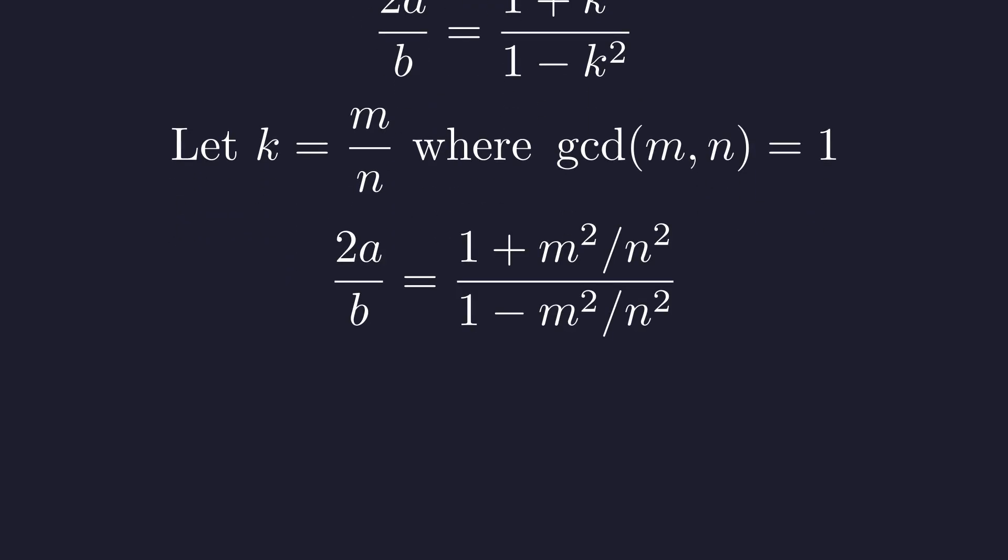Clear denominators by multiplying top and bottom by n squared. Now we have everything in terms of integers. This formula should remind you of the parameterization of Pythagorean triples.